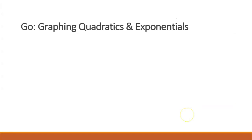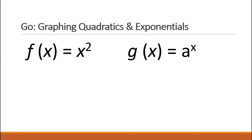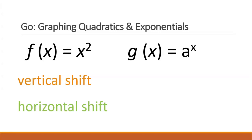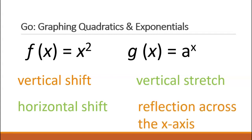You studied transformations of quadratic and exponential functions in Math 2. In that course you learned four ways to transform functions: first, vertical shift by adding or subtracting outside the function; second, horizontal shift by adding or subtracting inside the function; third, vertical stretch by multiplying by a factor outside the function; and fourth, reflection across the x-axis by multiplying by a negative factor outside the function.